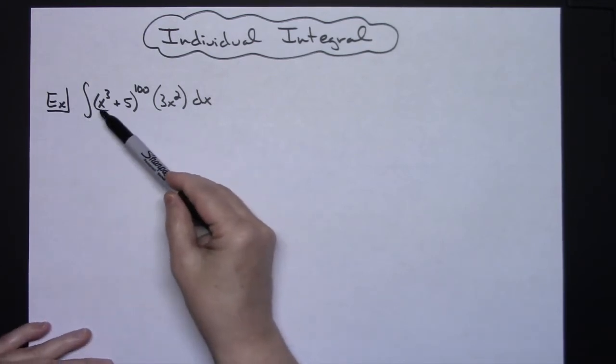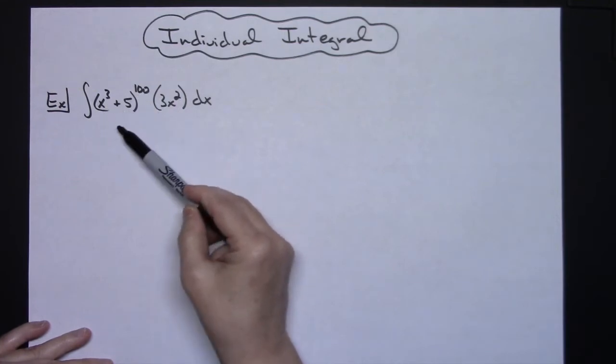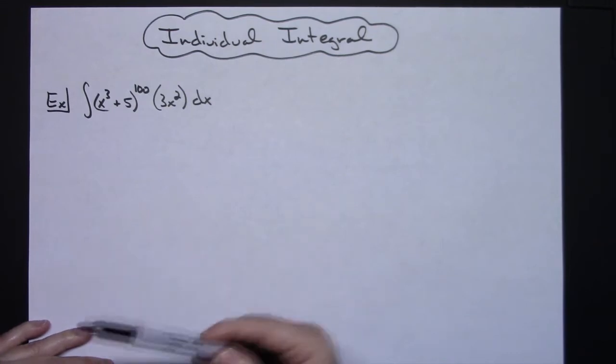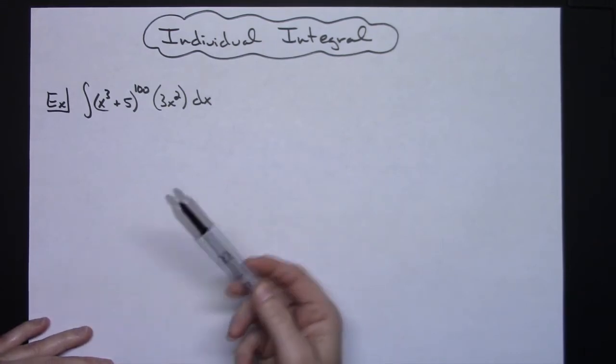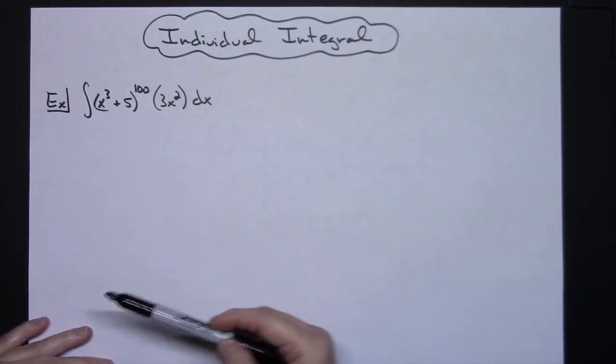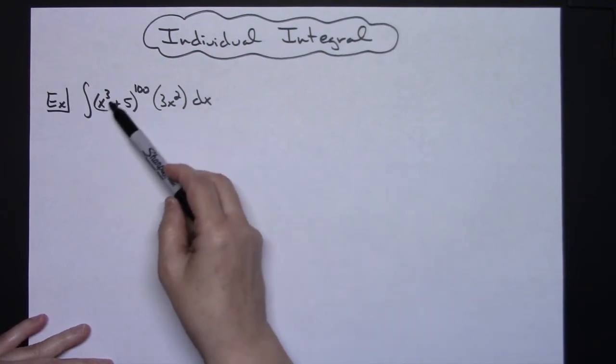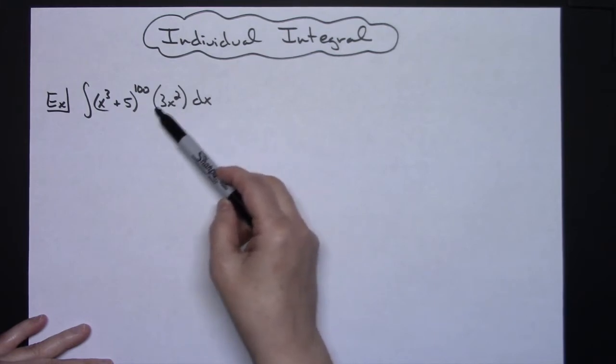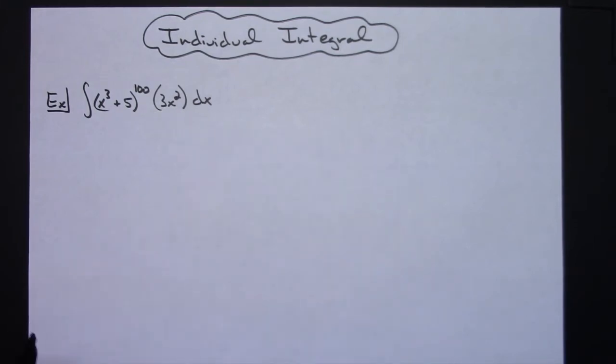Alright so we've got the integral of x to the third plus 5 raised to the 100 times 3x squared dx. So right after you have learned this u-substitution you know you need to hunt for something that when you take the derivative of it hopefully something will cross out. Seeing this x to the third I know if I take the derivative I'm going to get 3x squared so that is a good place to start.